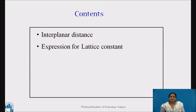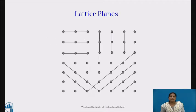The contents include interplanar distance and expression for lattice constant. An aggregate of a set of parallel equally spaced planes passing through the lattice points gives a crystal lattice. These planes are known as lattice planes and the perpendicular distance between neighboring planes is termed as interplanar distance or interplanar spacing.